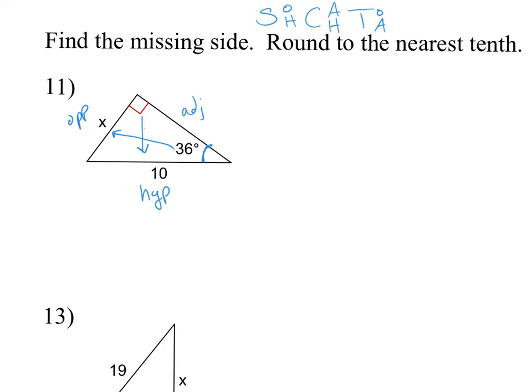Now, we're looking for the opposite side in relation to our 36 degree angle. And we're given a value for the hypotenuse, which is 10. So the function that uses opposite and hypotenuse is our sine function. So sine of our angle is equal to the opposite side divided by our hypotenuse.